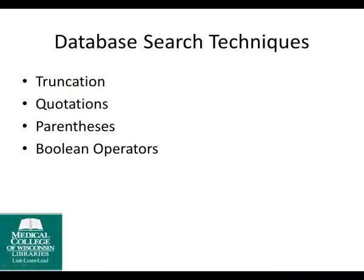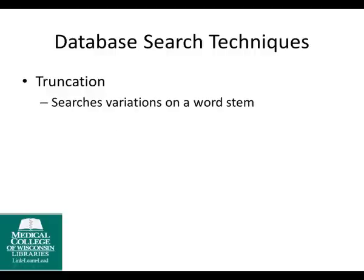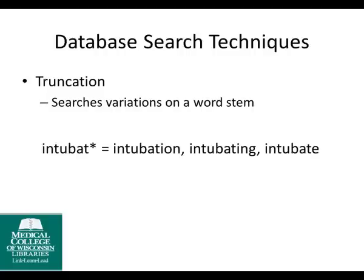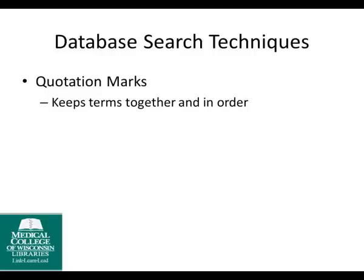Before we move on to conducting our search in PubMed, it's important to know some basic search techniques. These techniques apply to many databases, not just PubMed. First of all, many databases allow the use of truncation. Truncation is the addition of a symbol, usually an asterisk, at the end of a word stem to find variants of the root word, and this is very useful for finding synonyms. In this example, putting an asterisk after intubate will retrieve the words intubation, intubating, and intubate. The next technique is the use of quotation marks, which keeps terms together in the exact order.